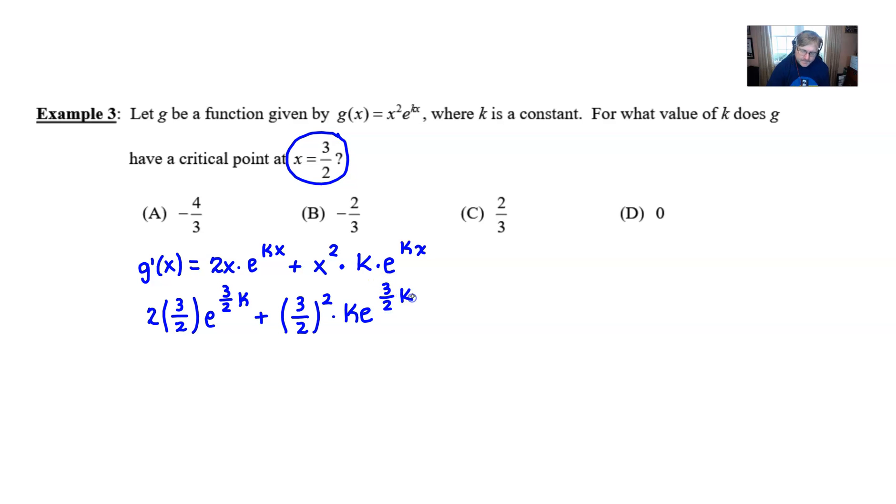And then we are going to set this equal to the value that we know must be true whenever a critical number occurs and that's zero.